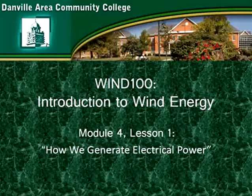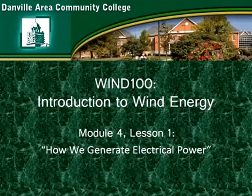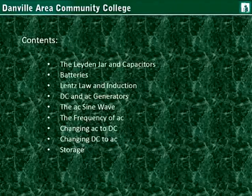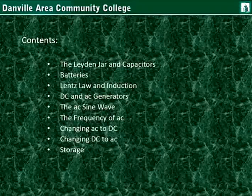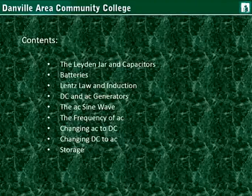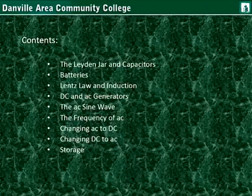This is lesson one for module four: How We Generate Electrical Power. Contents of this lesson include the Leiden jar and capacitors, batteries, Lenz's law and induction, DC and AC generators, the AC sine wave, the frequency of AC, and also important to understand with wind power: how to change alternating current to DC and also changing DC to AC, as well as storage.